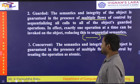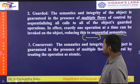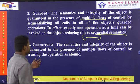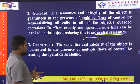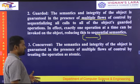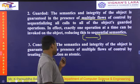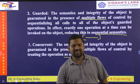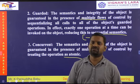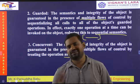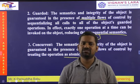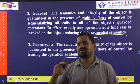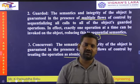In concurrent synchronization, semantics and integrity of the object is guaranteed in the presence of multiple flows of control by treating the operations as atomic operations — a single operation which executes at a particular time. So the three types are: sequential, guarded, and concurrent.